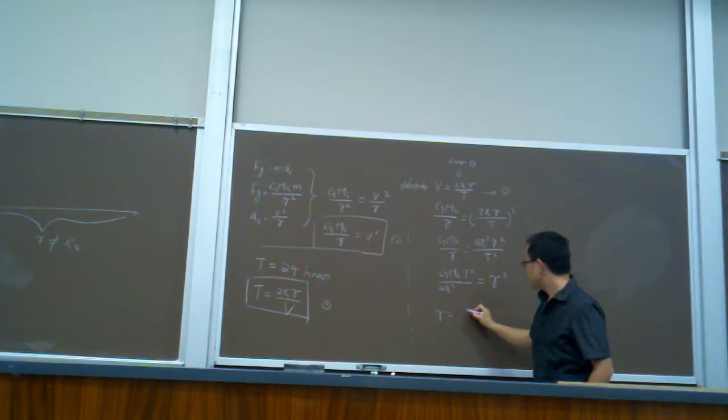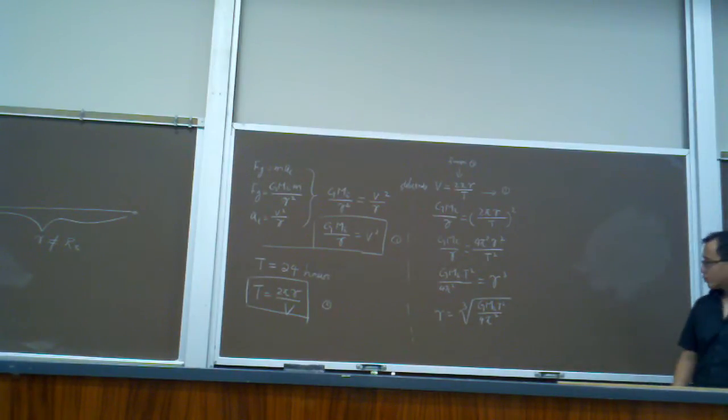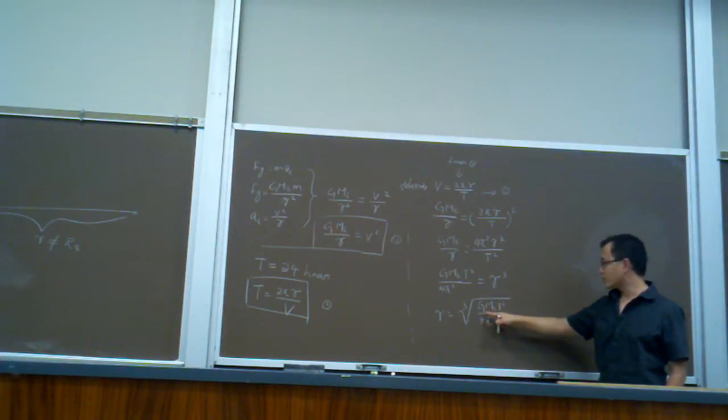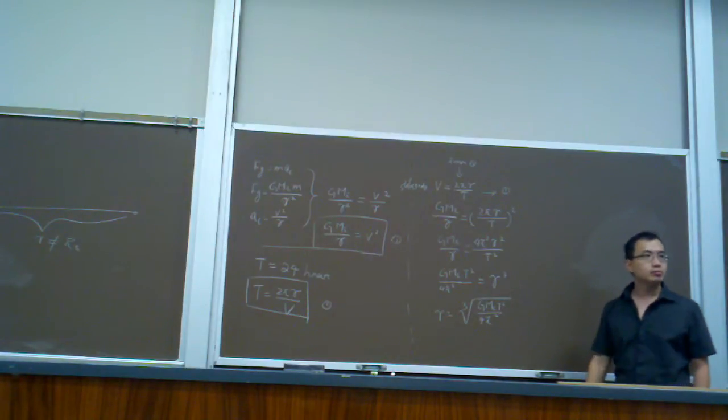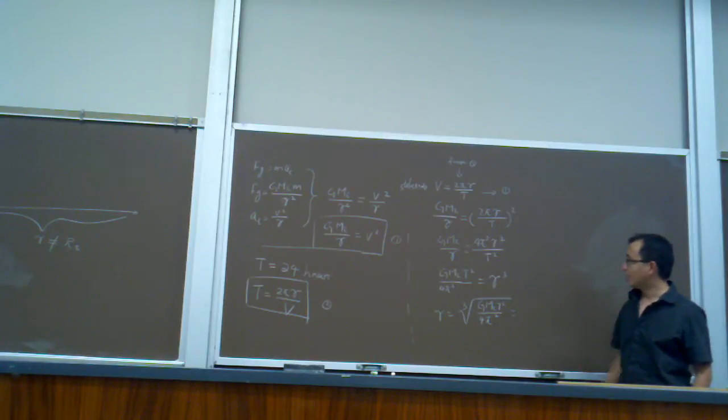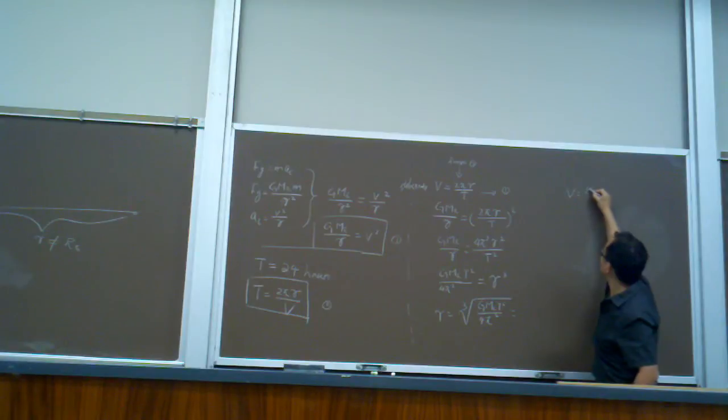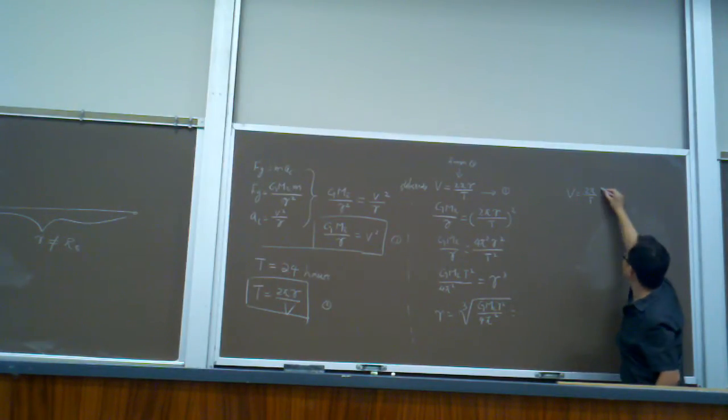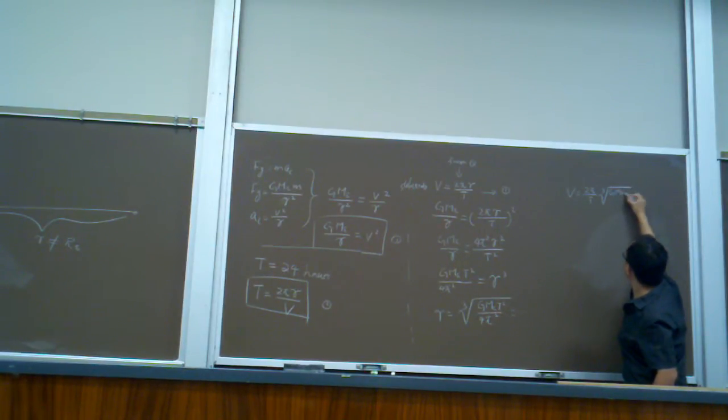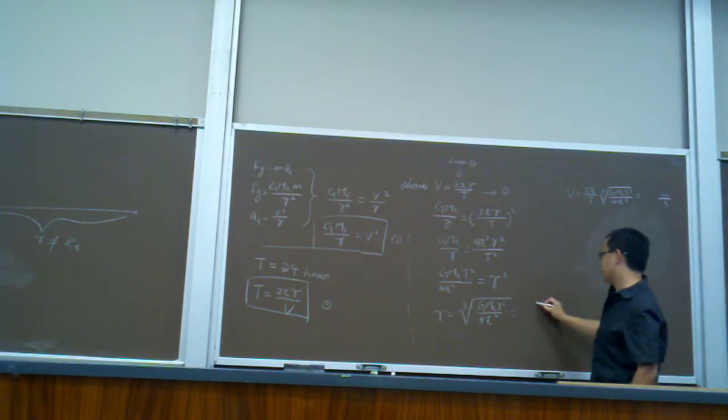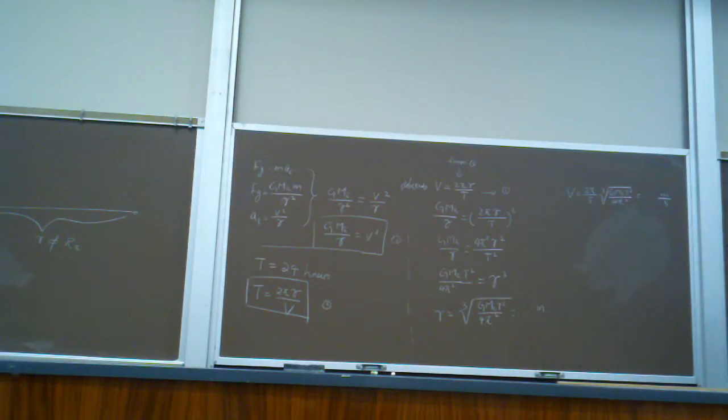R is simply the cube root of GmE T squared over 4π². And then, you'll have all these numbers: universal gravitational constant, mass of the Earth, the period of the Earth, and π is a geometrical constant. So, you can solve it to give R. And once you have R, substitute this into the velocity. So, you get V equal to 2π over T, multiplied by R, which is the cube root of GmE T squared over 4π². Any questions for the calculation? I'm not going to plug in the numbers here.